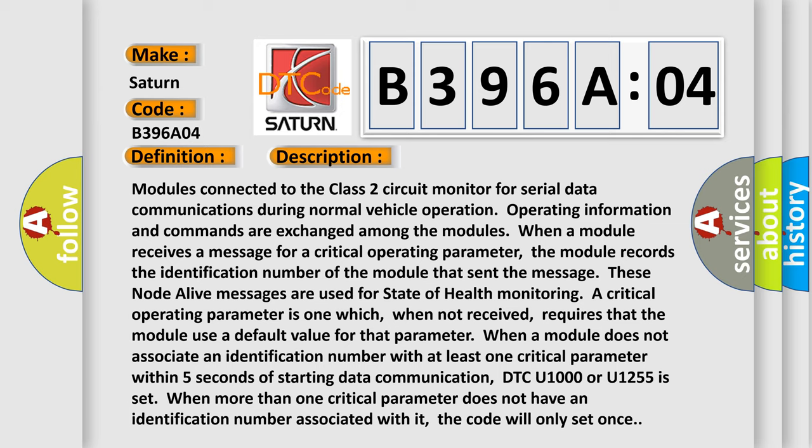When a module does not associate an identification number with at least one critical parameter within five seconds of starting data communication, DTC U1000 or U1255 is set. When more than one critical parameter does not have an identification number associated with it, the code will only set once.